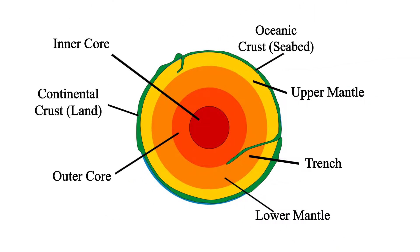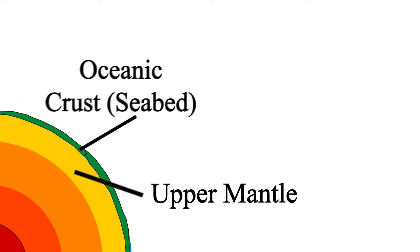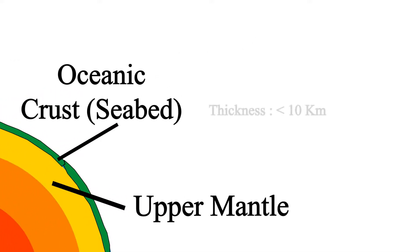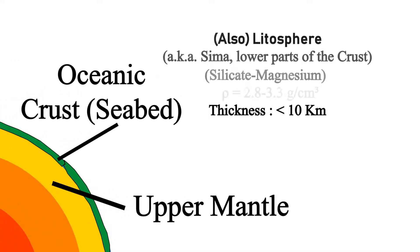The next one is the lower part of the lithosphere, which is called the sima. Its density is 2.9 grams per cc, and some parts of it are less than 10 kilometers thick.